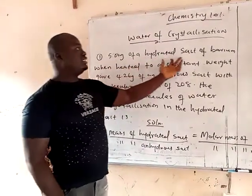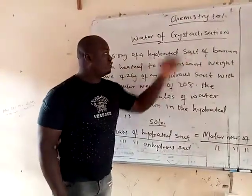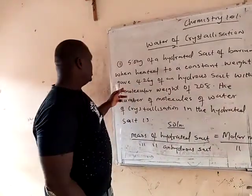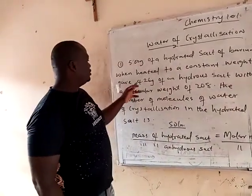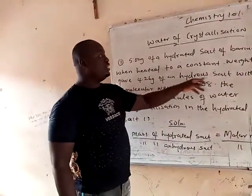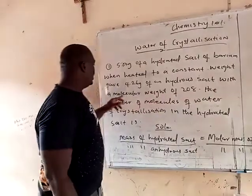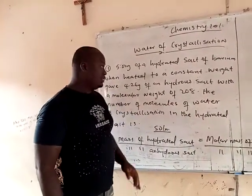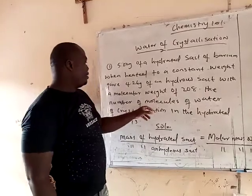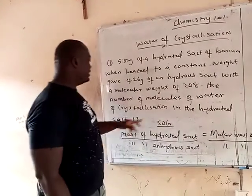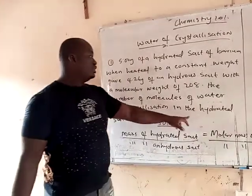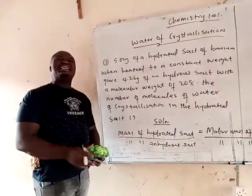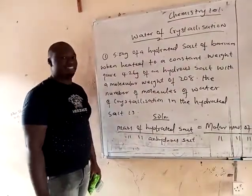Five grams of hydrated salt of barium, when heated to a constant weight, gives 4.2 grams of anhydrous salt with a molecular weight of 208. The number of molecules of water of crystallization in the hydrated salt — there are two ways to solve this.